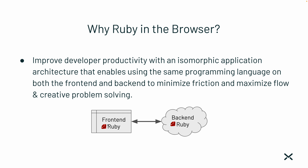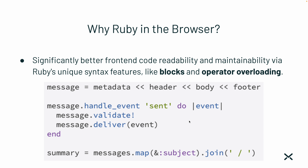An isomorphic application architecture means you're using the same programming language on both the server and client — both back end and front end. Developers don't have to do as much context switching between multiple programming languages. We minimize friction and maximize their flow and creativity by using one language on both ends — front end Ruby in the browser and back end Ruby in the cloud. Next, Ruby has significantly better front end code readability and maintainability via unique syntax features like blocks and operator overloading — neither of which JavaScript supports.